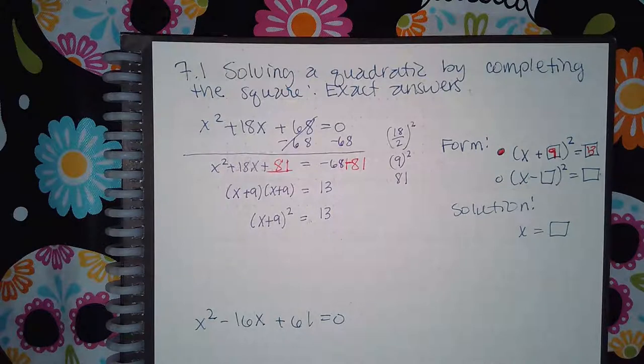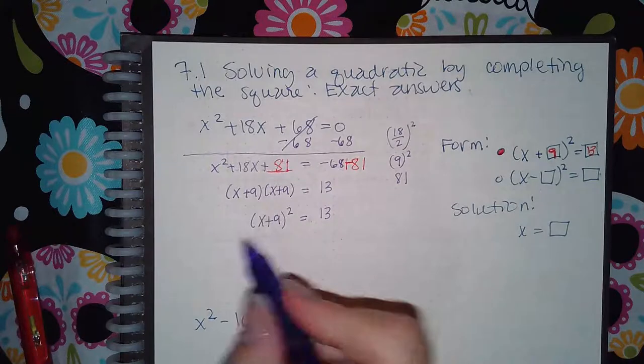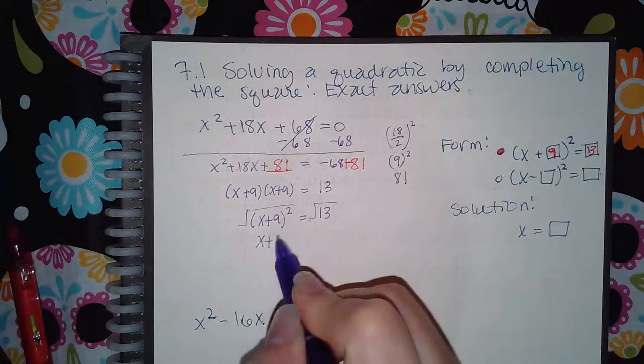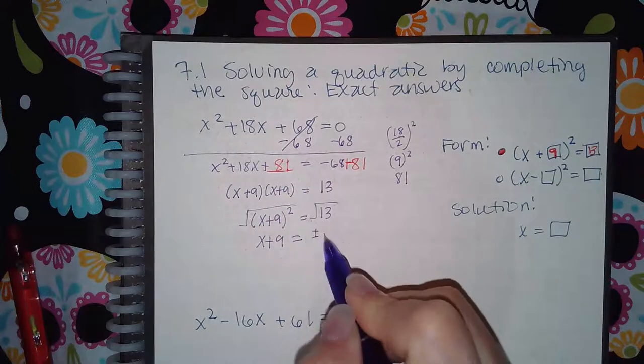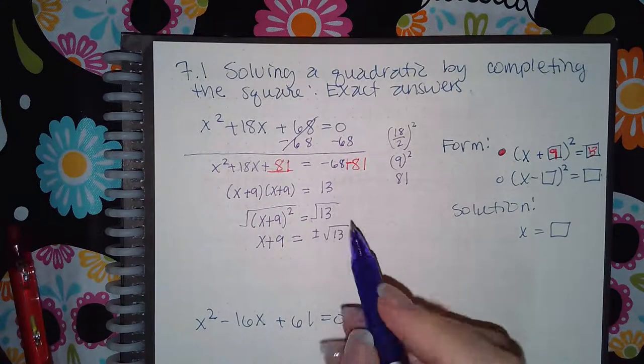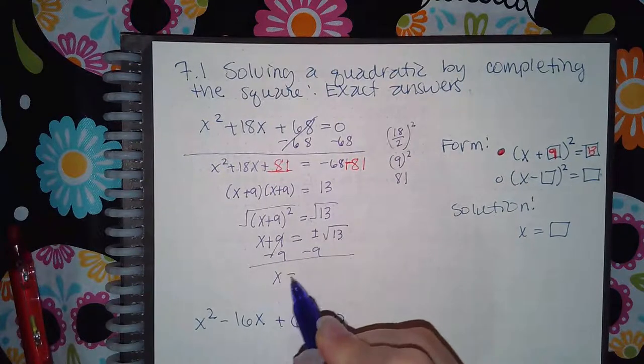Now for the solutions I have to actually solve this. So take the square root of both sides. You get X plus 9 equals plus or minus the square root of 13. The square root of 13 does not simplify, so we just minus 9 from both sides. X equals negative 9 plus or minus the square root of 13.